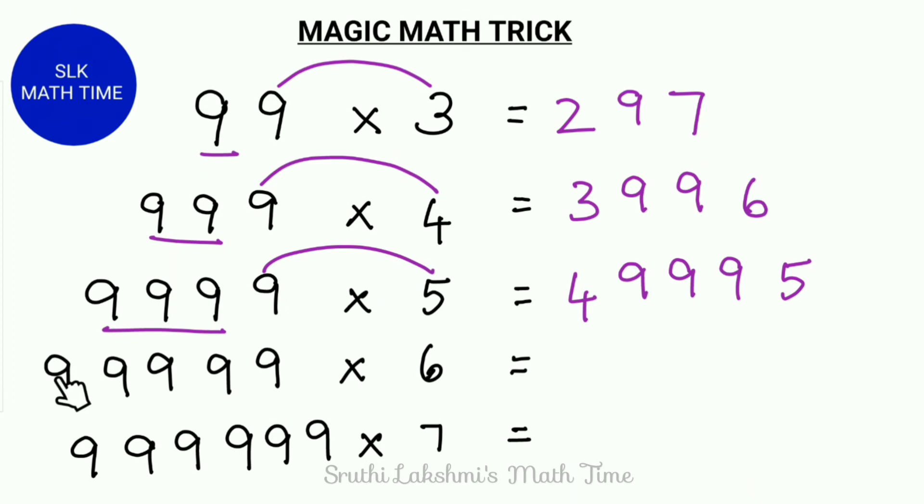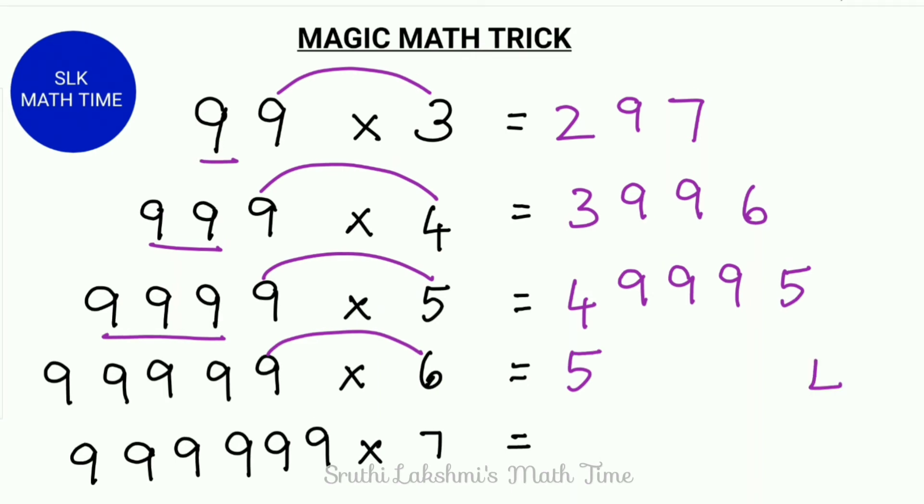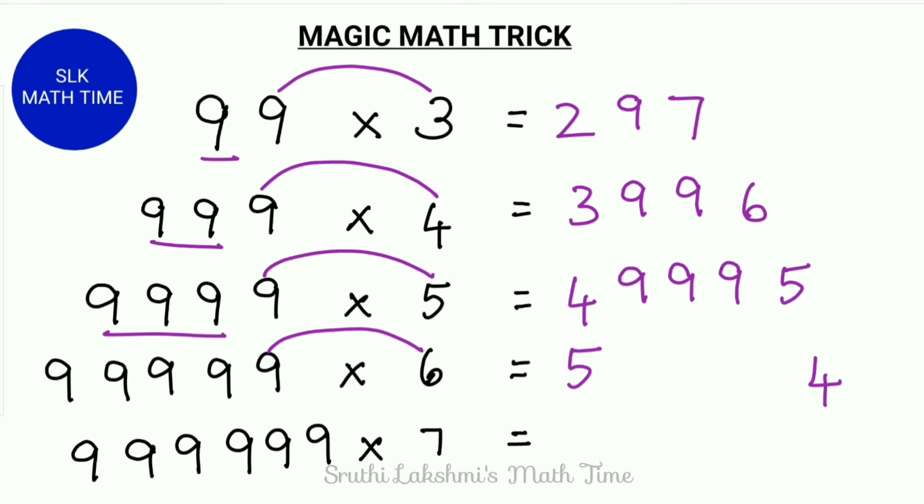Next, let's try 99999 into 6. So we do 9 into 6 which is 54. Next, we see how many 9's are there before this 9? There are 4 9's. So we write 4 9's over here.